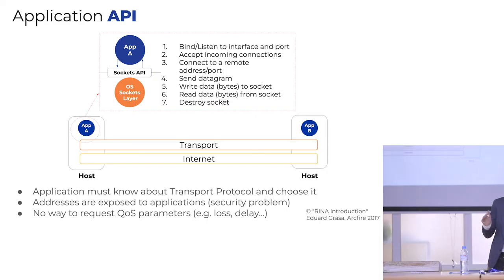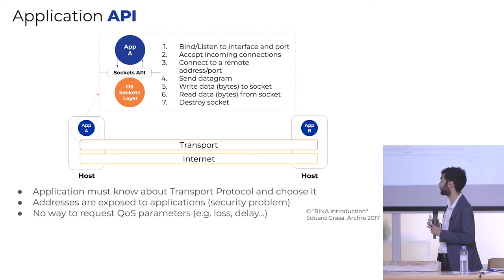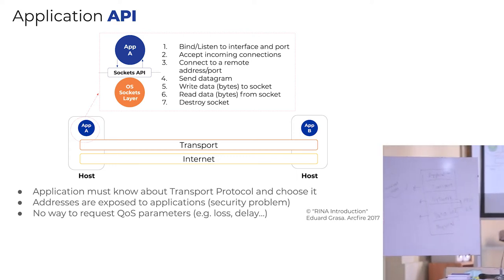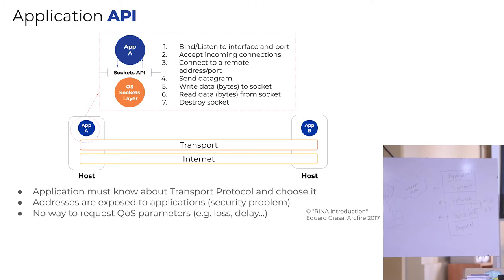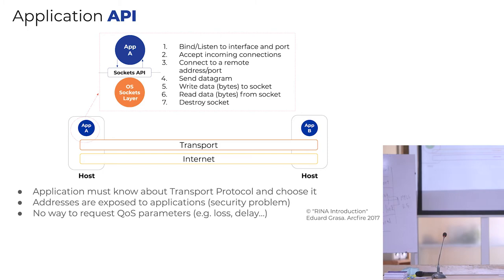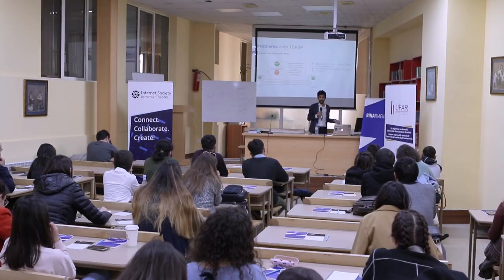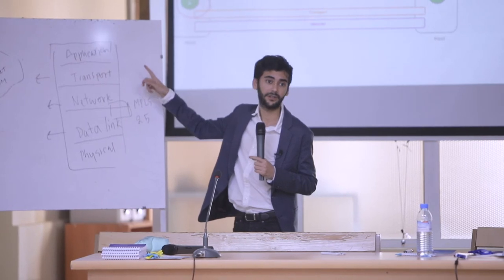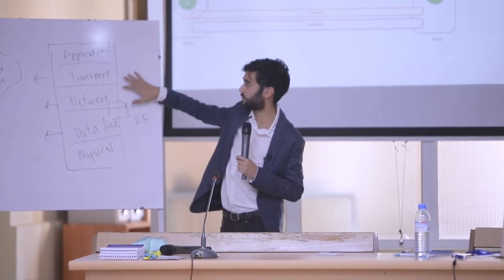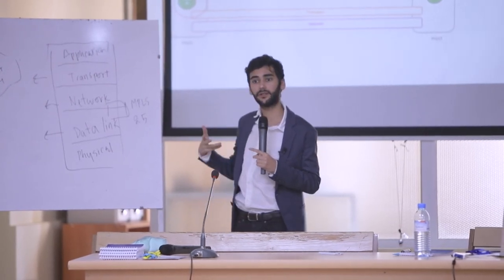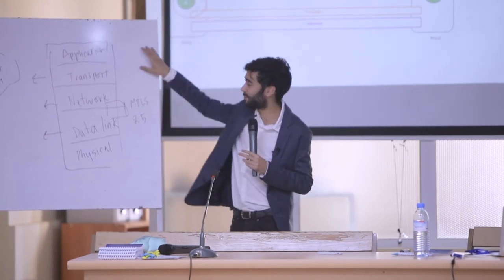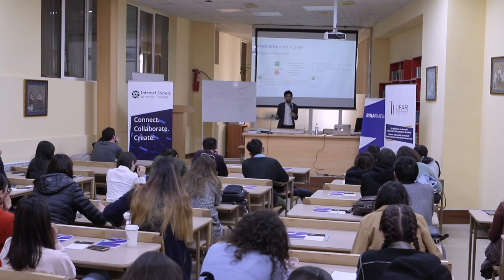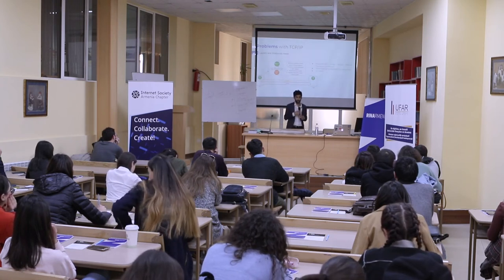Another problem with the structure of TCP/IP is that there is no clear interface between the layers. For example, when you need to develop an application and you need a network requirement, you have the socket API. But you need to know the IP address, whether you're using TCP or UDP, and the port. There is no actual clear interface — you actually need to know the information of the lower layers. So if for some reason the port is changed, and your application has it hard-coded, your application is not going to work anymore.